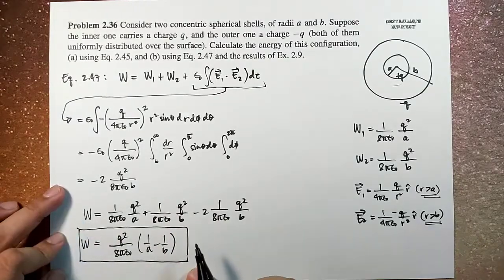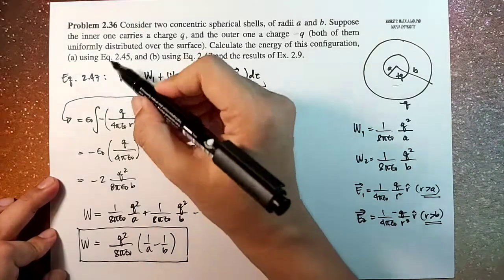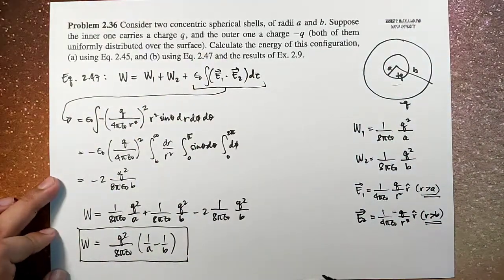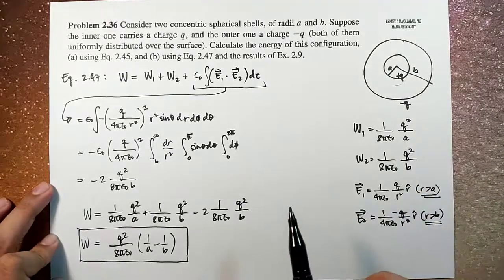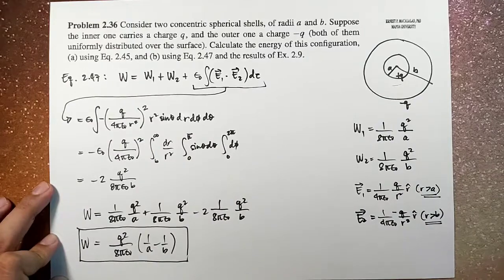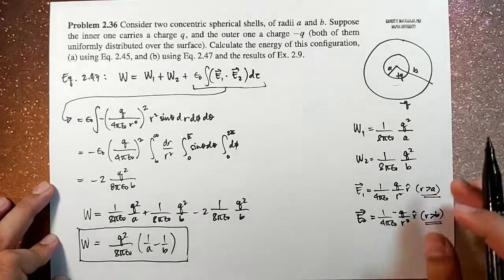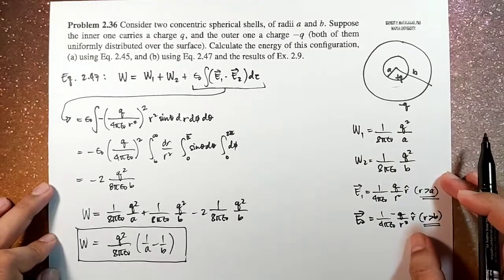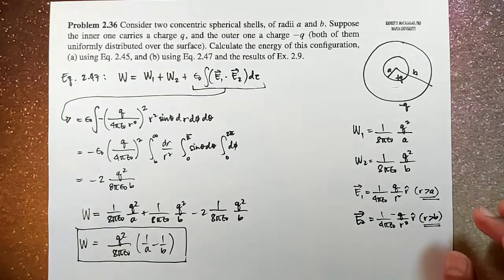As you will notice, this is the same result that we obtained using equation 2.45, using a different approach. So this demonstrates that we can calculate the energy of any configuration in so many ways, and the physics would still be consistent. Okay, so that's it. Thank you for watching, and I'll see you guys in the next video. Bye-bye!